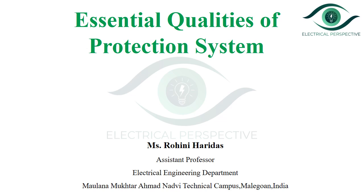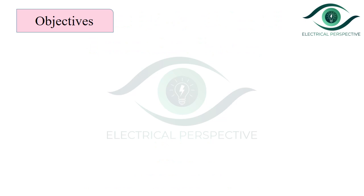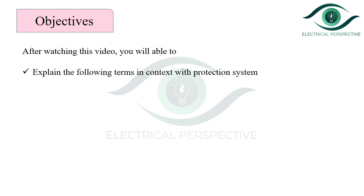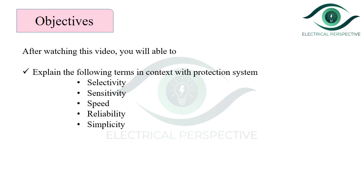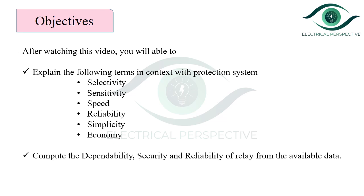In this video, we will discuss the essential qualities of a protection system. After watching this video, you will be able to explain the following terms in context with the protection system: selectivity, sensitivity, speed, reliability, simplicity, and economy. You will also be able to compute the dependability, security, and reliability of a relay from available data.